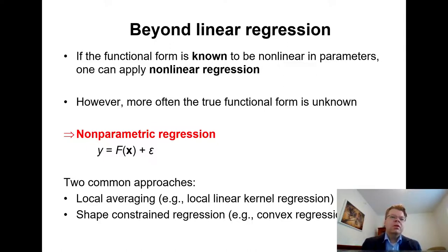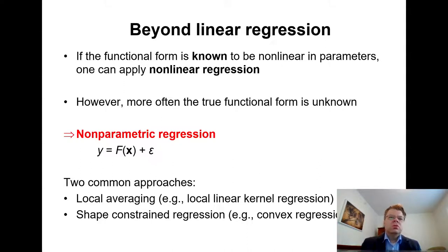We do not need to specify the functional form beforehand. There are two basic approaches to estimating an unspecified regression function: one is local averaging, and another is shape constraint regression. In both cases, we can build upon the linear regression studied in this course. For example, in local averaging a very common approach is so-called local linear regression or local linear kernel, where we fit the linear regression but restrict it to a certain local environment. Shape constraint regression — for example, convex regression — is an area where I have done considerable work.